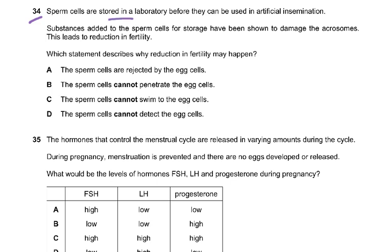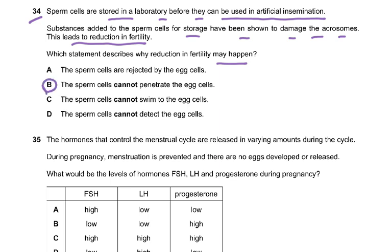Question 34: sperm cells are stored in a laboratory before use in artificial insemination. Substances added for storage have been shown to damage the acrosomes, leading to reduced fertility. Why? The answer is B — the sperm cells cannot penetrate the egg cell, because the acrosome releases enzymes that digest the outer layer of the egg cell.